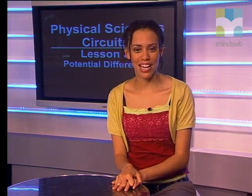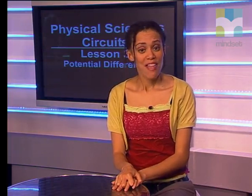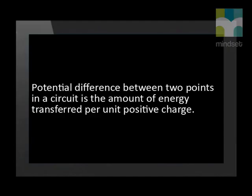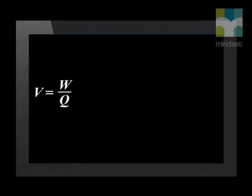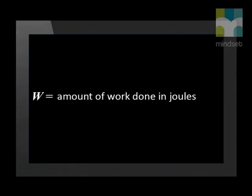Now let's define potential difference. Remember that if energy is transferred, work is done. We define potential difference between two points in a circuit as the amount of work done per unit positive charge. This gives us the equation V = W ÷ Q, where W equals the amount of work done in joules.